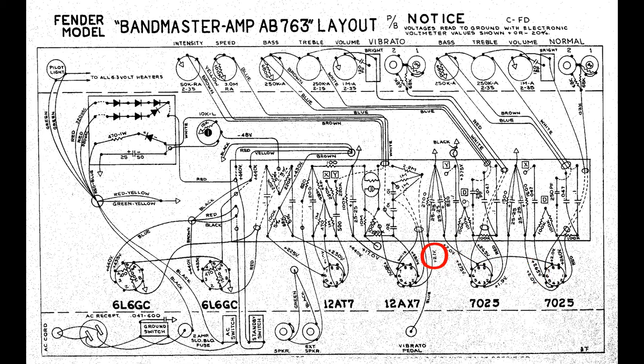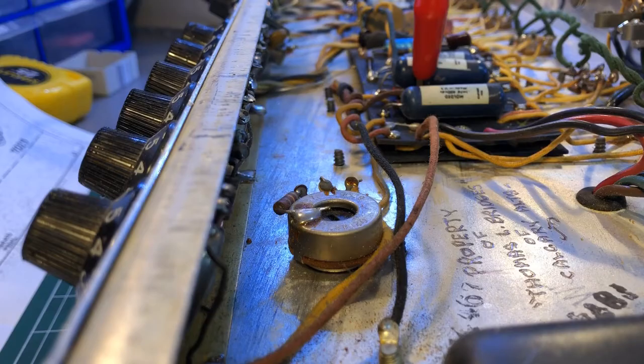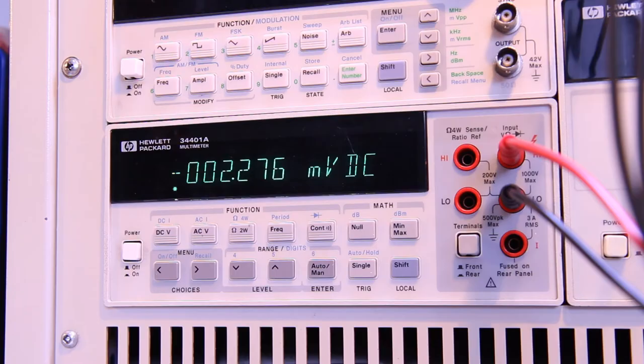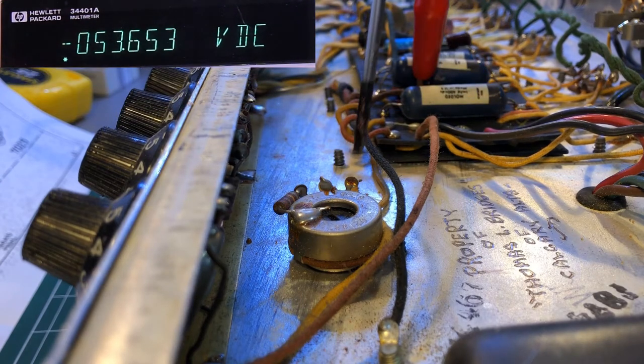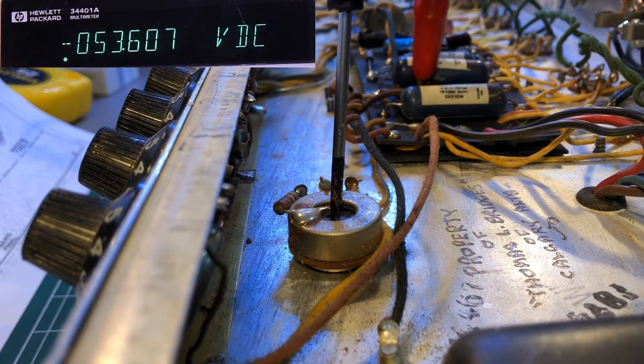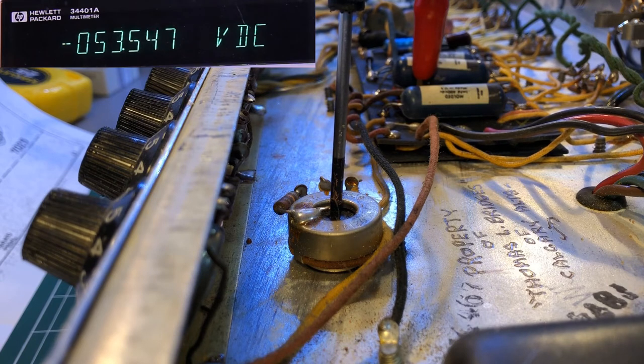I have then checked all the various voltages and everything is pretty close to the specs, but I want to focus on the bias voltage that should read minus 48V. After letting the amp warm up, we are still reading close to minus 54V, which we will adjust now. Having the bias set too high will cause a higher power consumption when idle, as well as a shorter power tube lifespan.